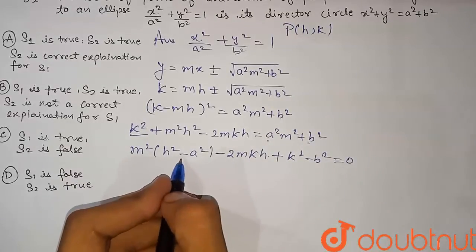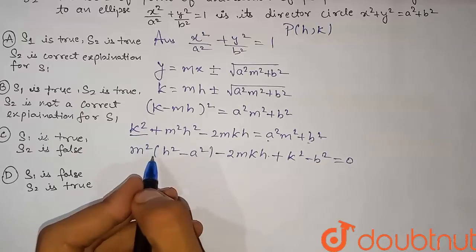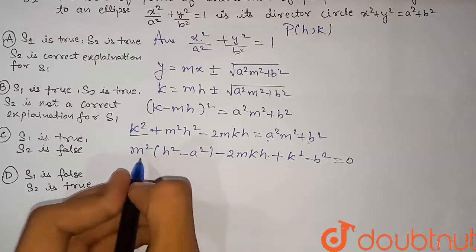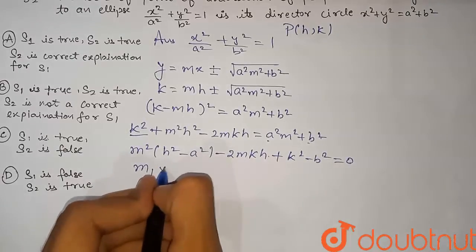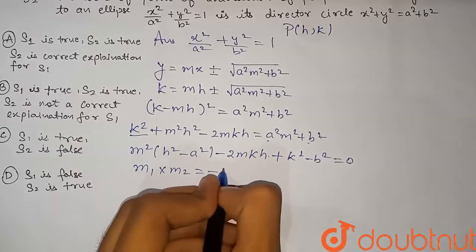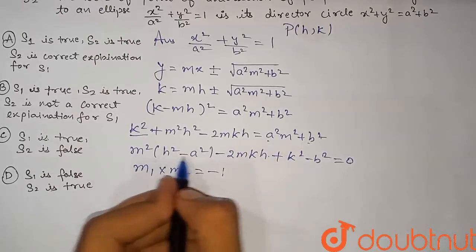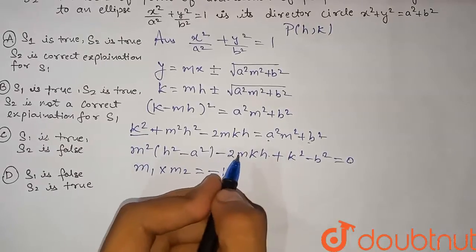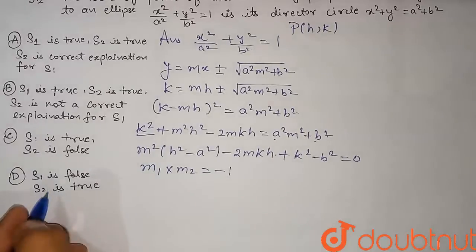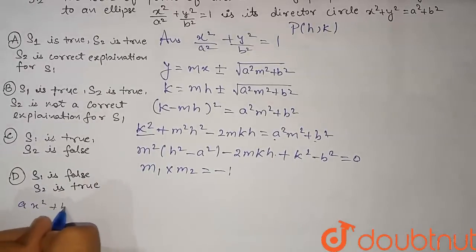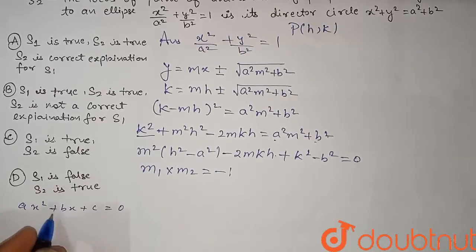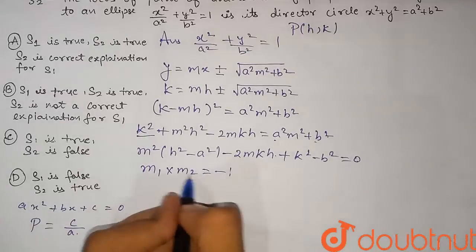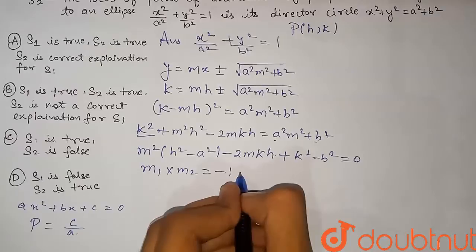Since we need the locus of the point of intersection of perpendicular tangents, we apply the condition of perpendicularity: m₁ · m₂ = −1. For a general quadratic am² + bm + c = 0, the product of the roots equals c/a. So here, the product of the roots equals the constant term divided by the coefficient of m².